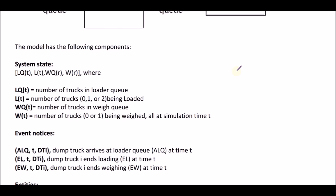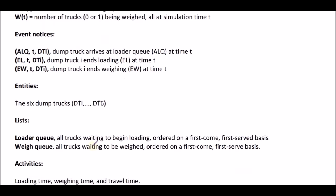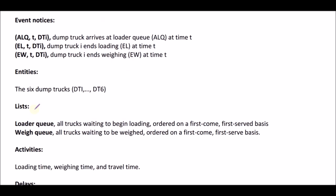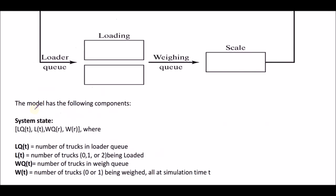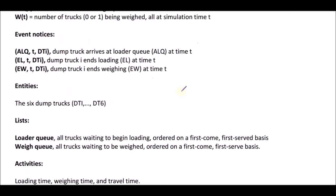Next we have entities, which represent the trucks. Since there are six dump trucks, we represent them as DT1, DT2 through DT6 — the number of entities depends on how many trucks you have. Then we have the lists, which indicate the queues present in the model. There are two queues: the loader queue, which holds trucks waiting to be loaded, and the weighing queue, which holds trucks waiting to be weighed on the scale.